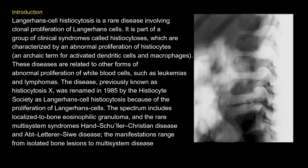Langerhans cell histiocytosis is part of a group of clinical syndromes called histiocytosis, characterized by abnormal proliferation of histiocytes — an archaic term for activated dendritic cells and macrophages. These diseases are related to other forms of abnormal proliferation of white blood cells such as leukemias and lymphomas. Previously known as histiocytosis X, it was renamed in 1985 by the Histiocyte Society as Langerhans cell histiocytosis, because of the proliferation of Langerhans cells.